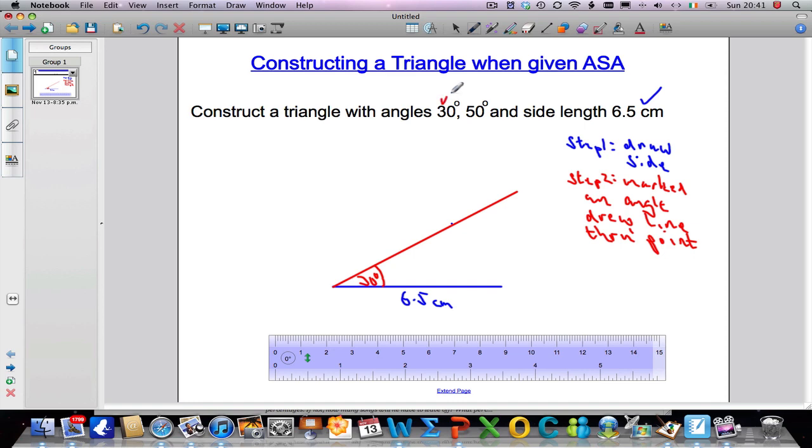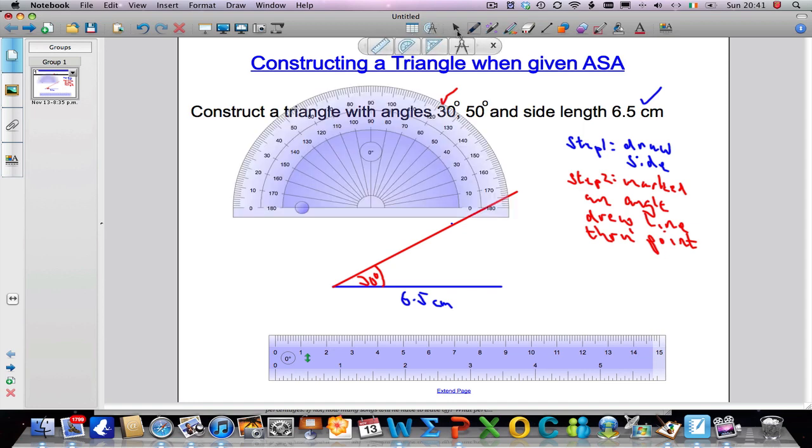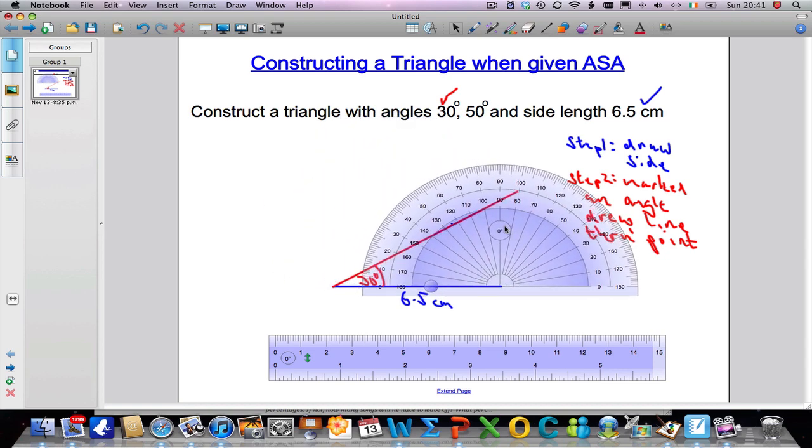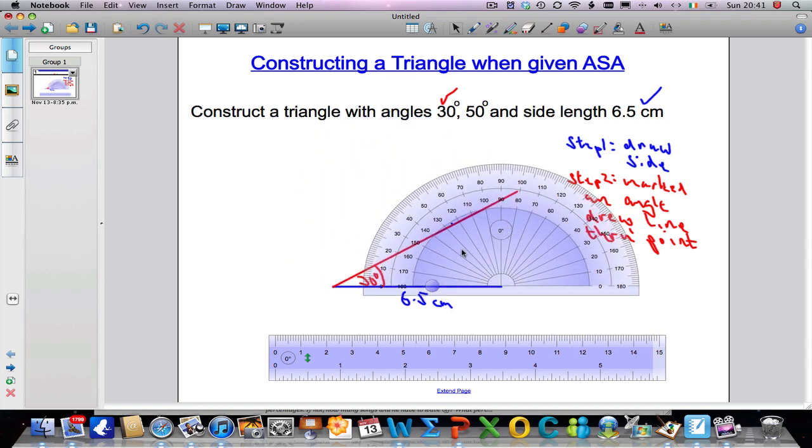Now final step is to, I need to mark an angle of 50 degrees and then draw a line through that. So again, taking my protractor, I am going to move it down to the other side of the initial line that I drew. And measuring from 0, so I am measuring from this side now, I want to mark an angle that is 50 degrees in length. So from 0 right the way around to 50. Let's put a little mark here.